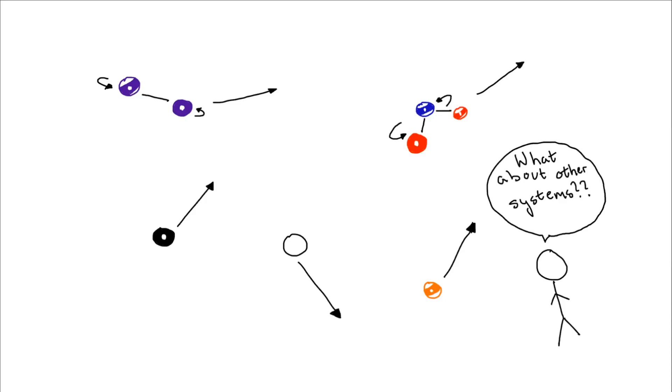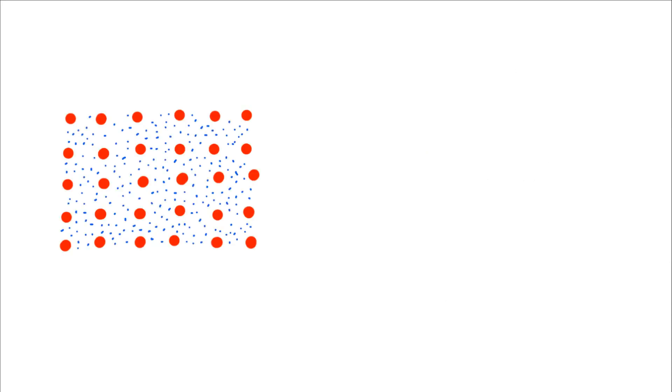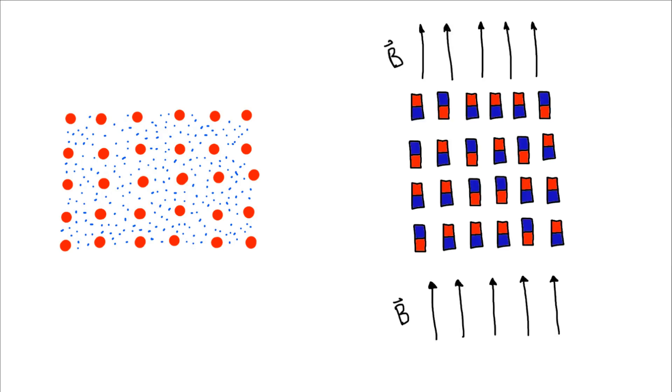Other systems that we might consider are the electrons in a large number of atoms in a lattice, or a bunch of stationary magnetic dipoles in a magnetic field. In both of these, it doesn't make much sense to talk about their kinetic energy. So if we want to use thermodynamics, we need to generalize our notion of temperature to also include these systems.